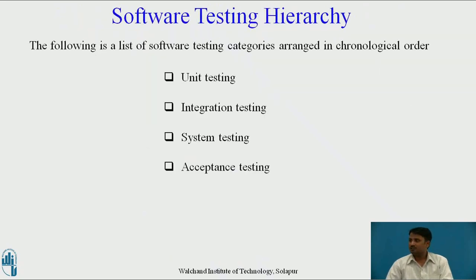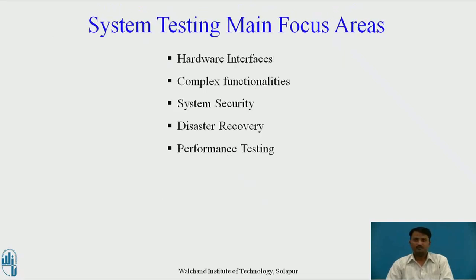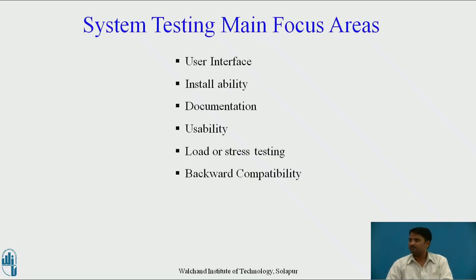The software testing hierarchy is: unit testing, integration testing, system testing, and acceptance testing. System testing main focus areas include hardware interfaces, complex functionalities, system security, disaster recovery, performance testing, user interface, installability, documentation, usability, load or stress testing, and backward compatibility.